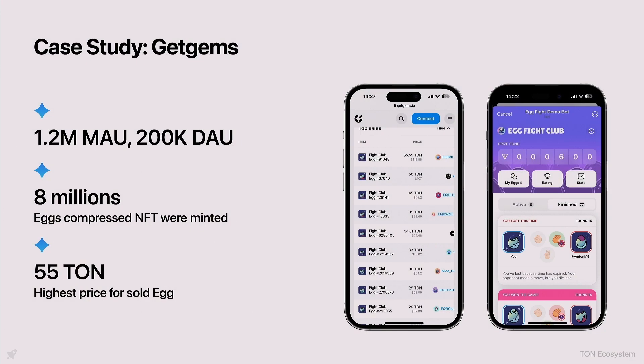How did this help Get Gems? They got 1.2 million monthly active users for Egg Fight Club, with a 200,000 daily audience — quite good results. The users of Egg Fight Club minted over 8 million eggs using compressed NFT technology. While early users received their eggs for free, the most expensive egg sold on the market went for 55 TON — a pretty good outcome.